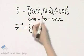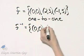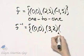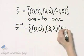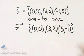So zero, zero—I switch the order, but of course it looks the same, zero, zero. Two, three becomes three, two, and negative one, five becomes five, negative one. Here is the inverse of this function.